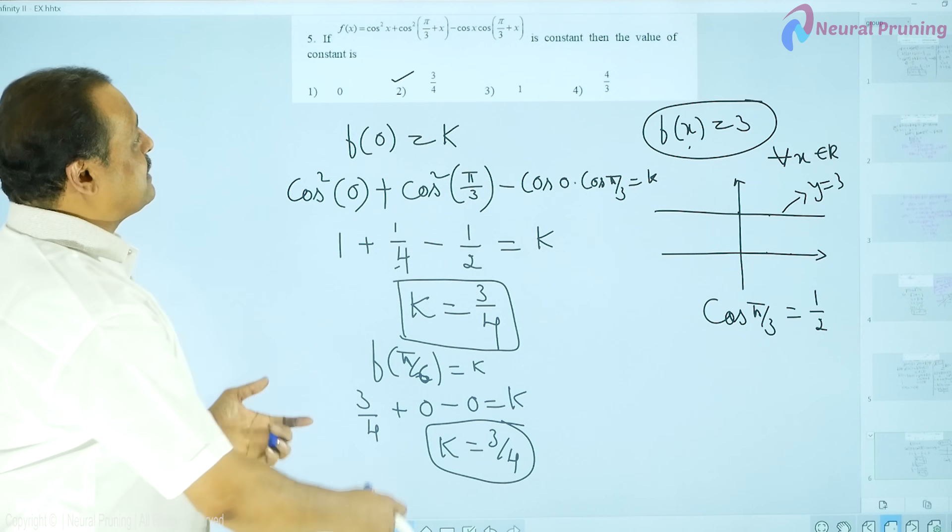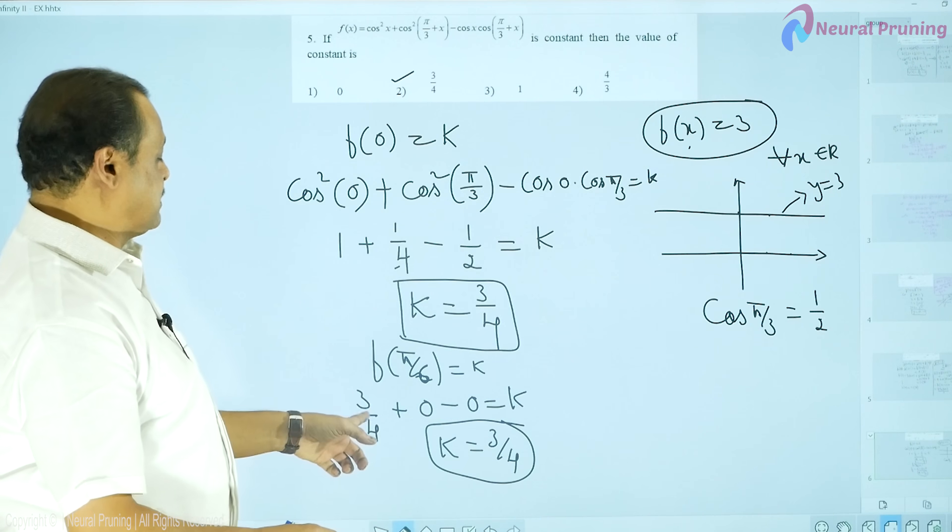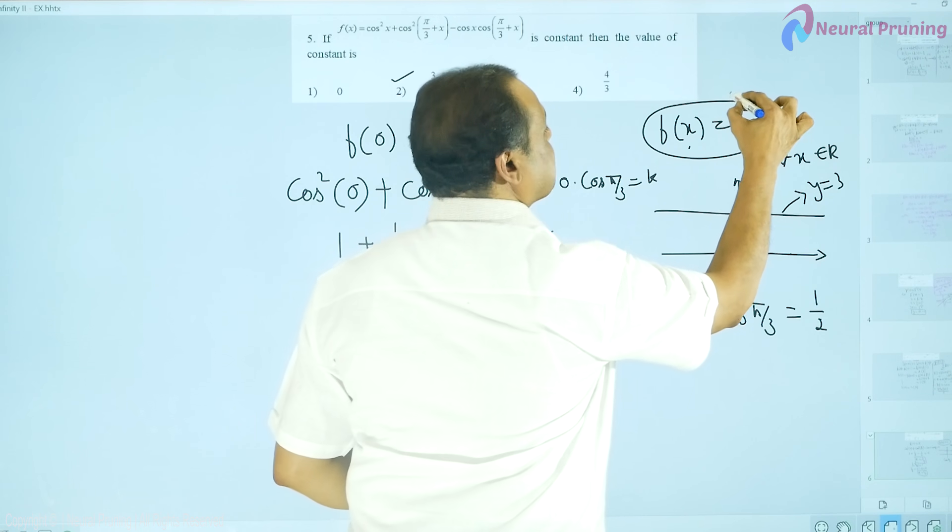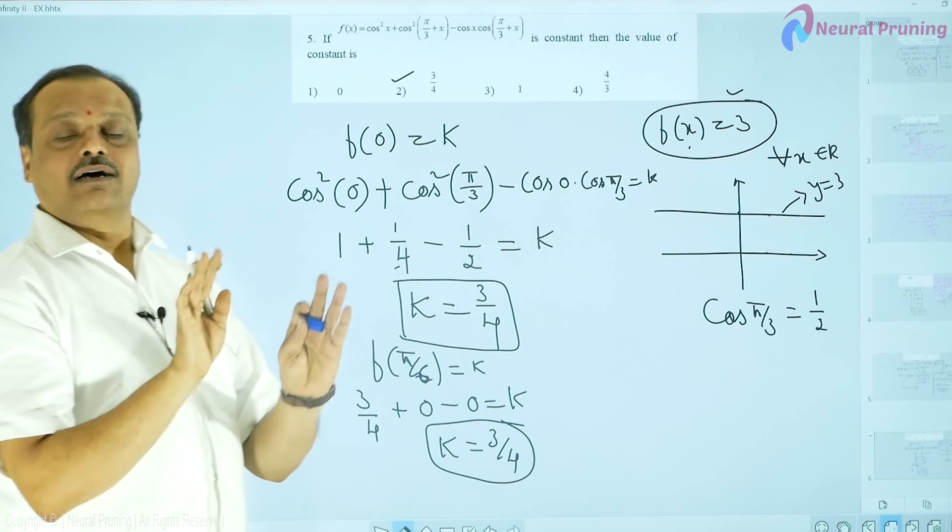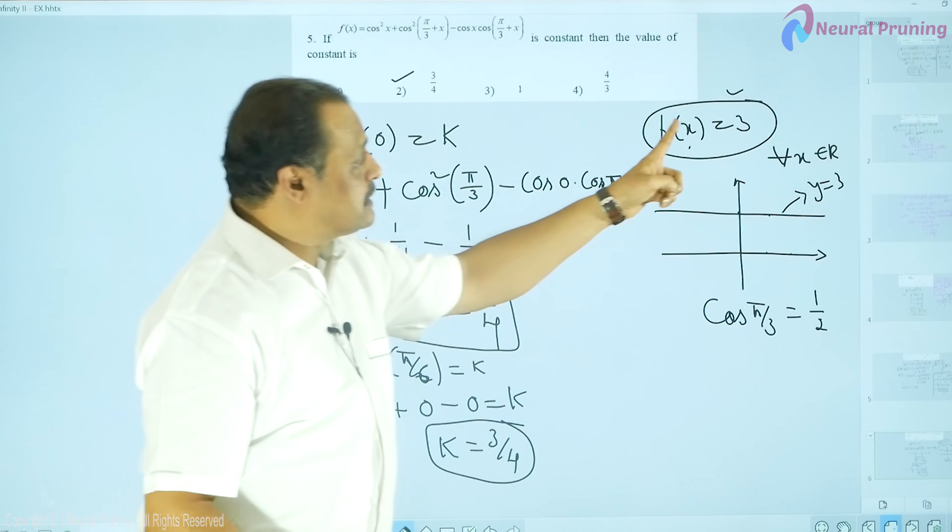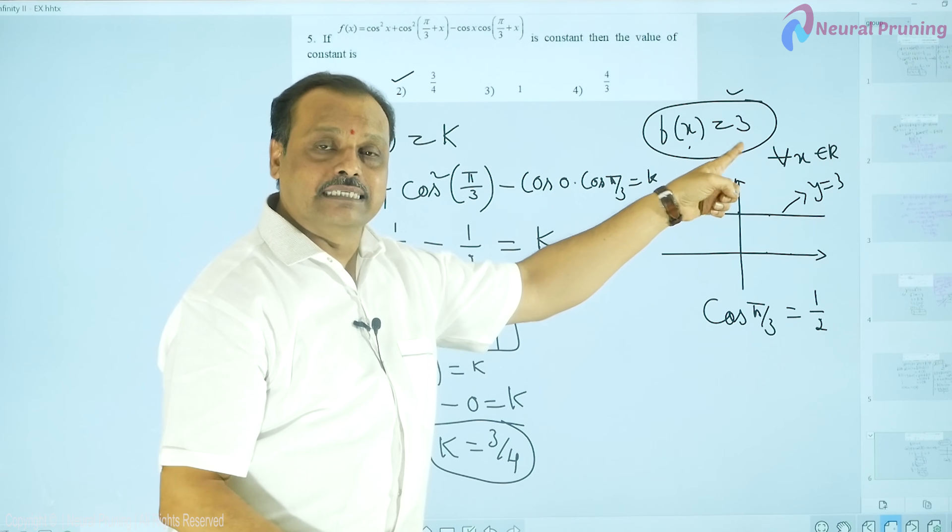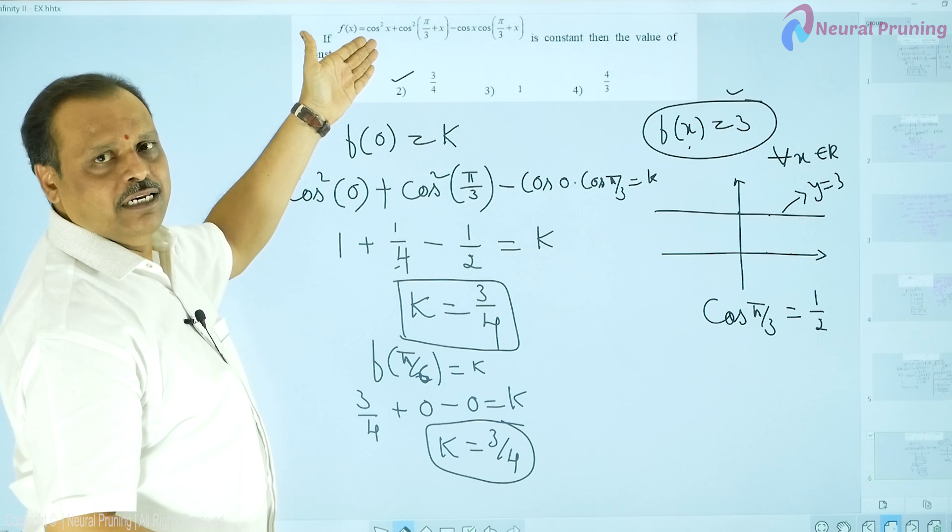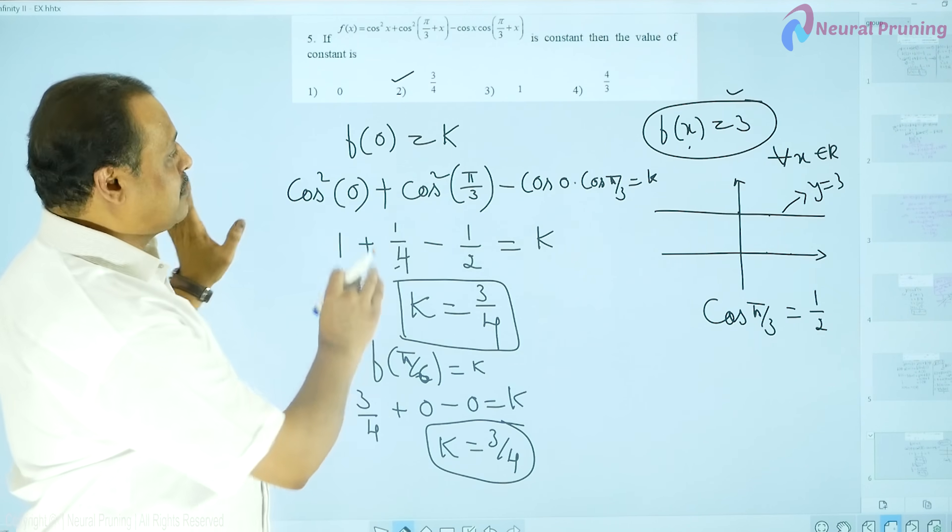In this way, you can suppose any value for that expression. Any value. And you can find the value of k. And this is the prerequisite for this example. That it is a constant function. Remains same. The value of the function remains same for any value of x. Particularly, substitute a value and get the value of the constant. This is how this problem can be easily solved.